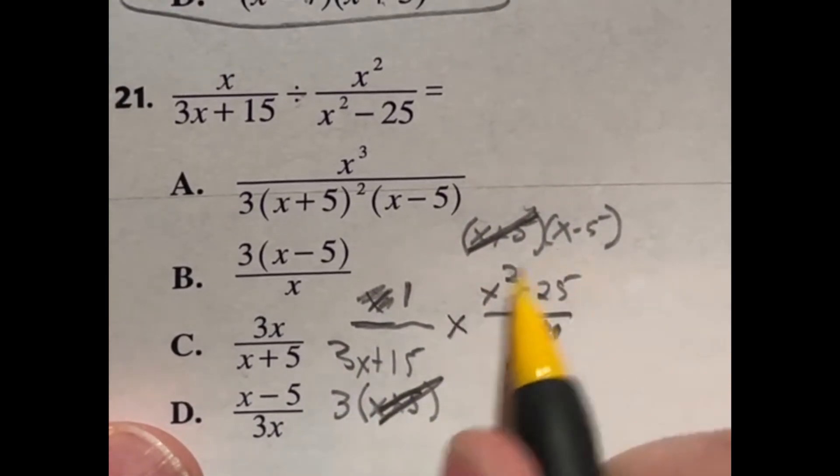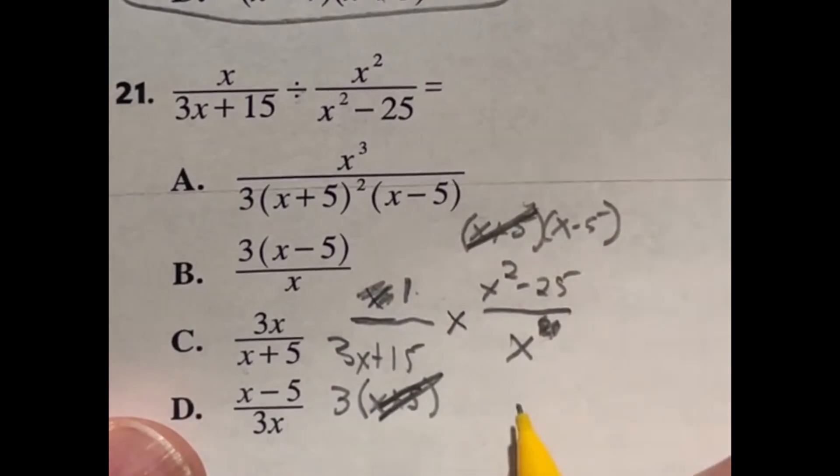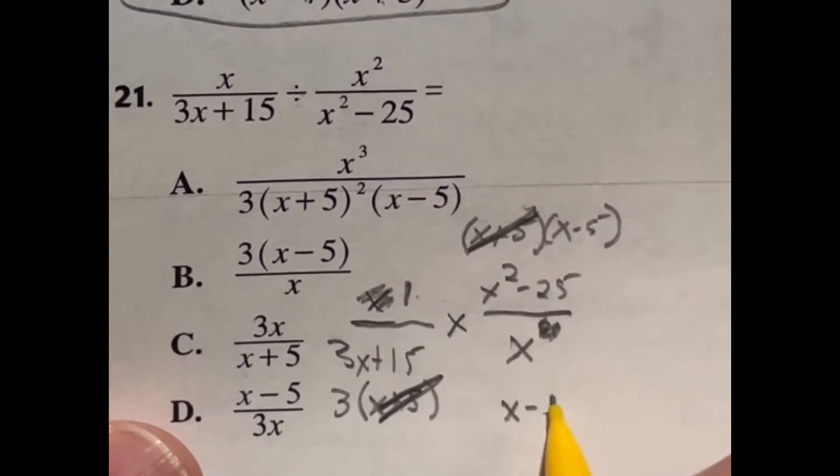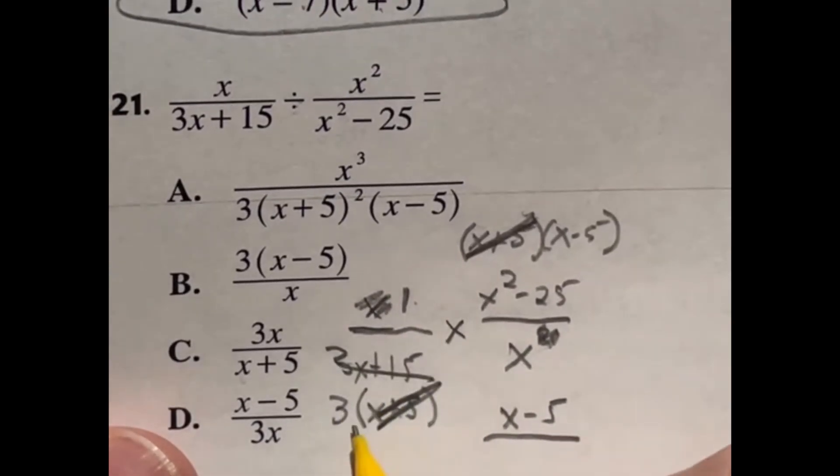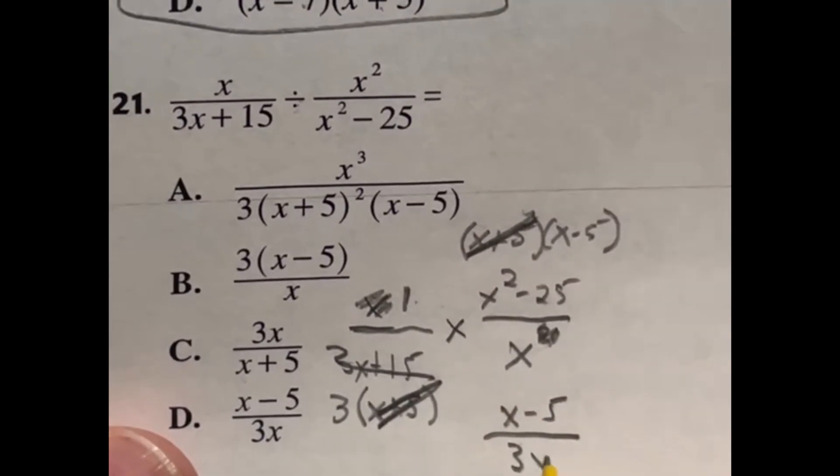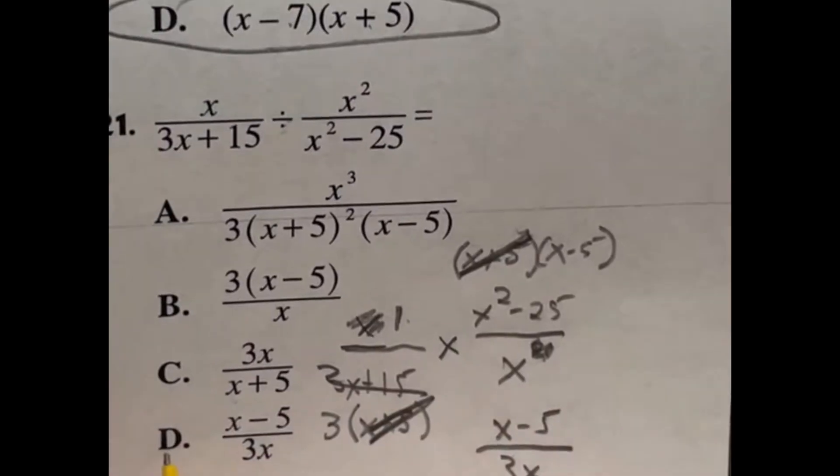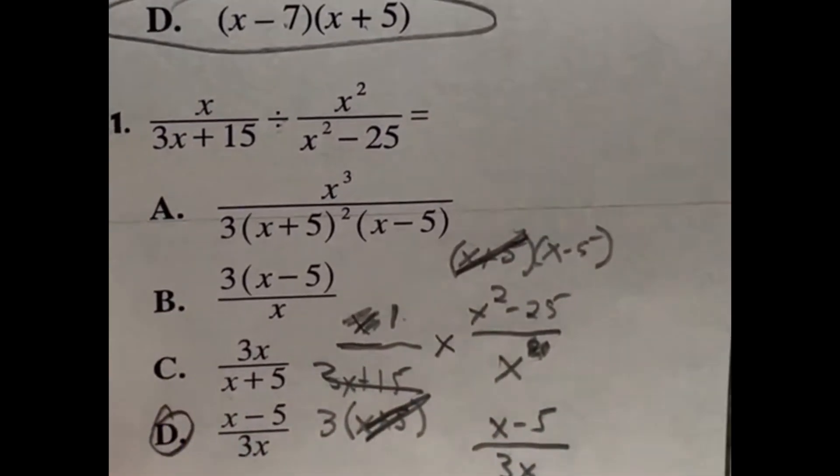Now we're ready to write our final thing. So we have one times x minus five on top, which is just going to be x minus five. And on bottom, we have this three because this all canceled out to this. And we have an x. So we have three x. That means our final answer here is going to be d: x minus five over three x.